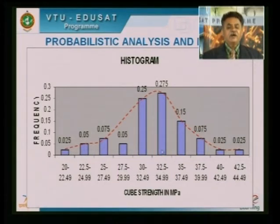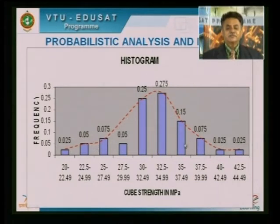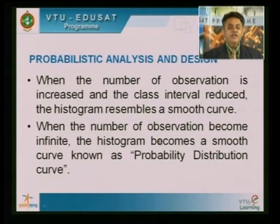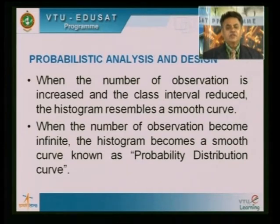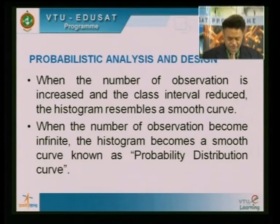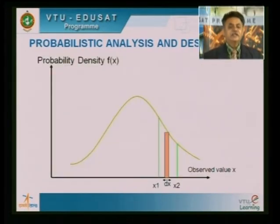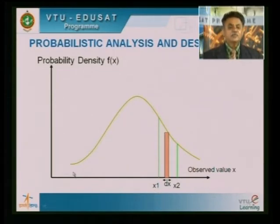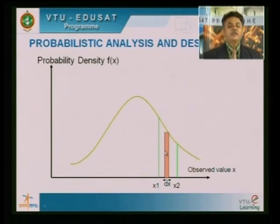Between 30 to 35 the range is more. If you plot the center of the histogram bars you get a smooth curve called the probability curve. When the number of observations increases and the class interval decreases, the rectangular columns become a smooth curve — this is called the probability distribution curve. I now use the term probability density function f(x) on the y-axis, and get a smooth bell-shaped curve.